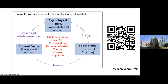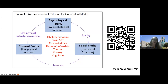Here is a biopsychosocial frailty model prepared by our very own Dr. Young-Karis — all references are in the QR code. It shows that frailty is quite complicated. You can think of it as having multiple aspects: not only physical frailty, which is how we traditionally think of frailty, but also social frailty and psychosocial frailty. This is particularly helpful to think about in our patients living with HIV.